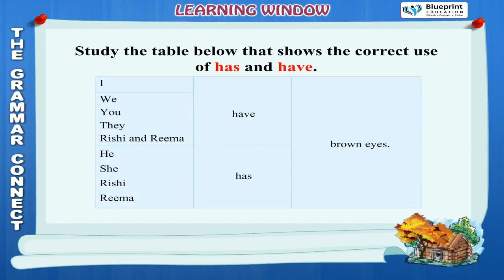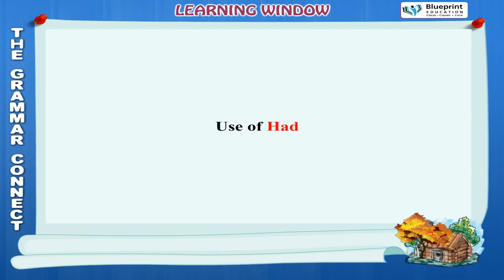I have brown eyes. We have brown eyes. You have brown eyes. They have brown eyes. Rishi and Rima have brown eyes. He has brown eyes. She has brown eyes. Rishi has brown eyes. Rima has brown eyes.